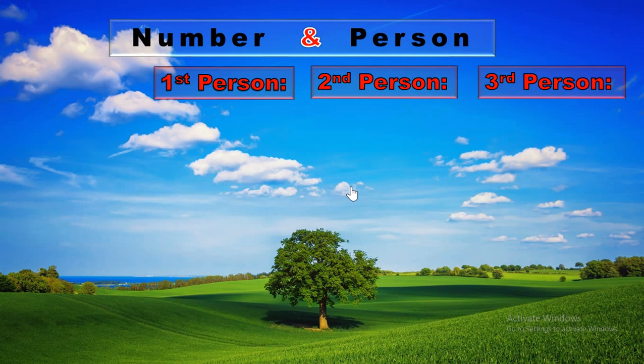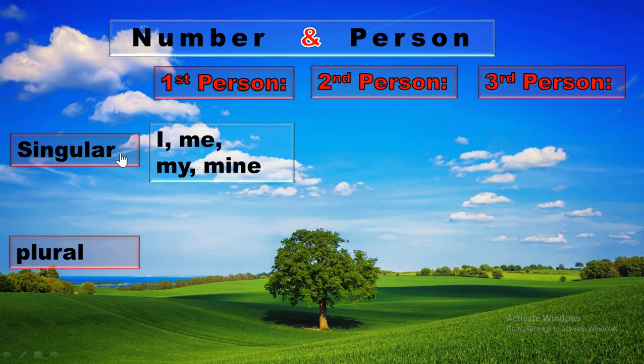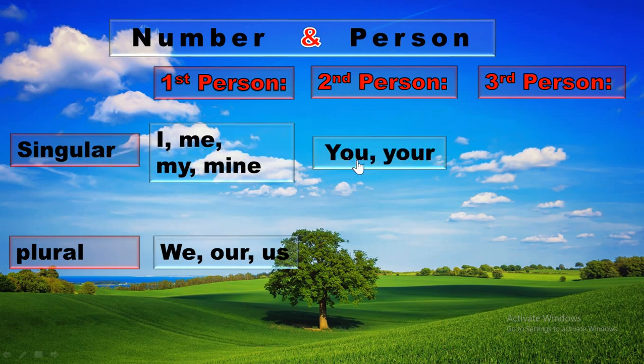Number can be divided into two categories: singular and plural. In first person singular, the words are I, me, my, and mine. In first person plural, the words are we, our, us. In second person singular, the words are you and your. In second person plural, the words are also you and your.